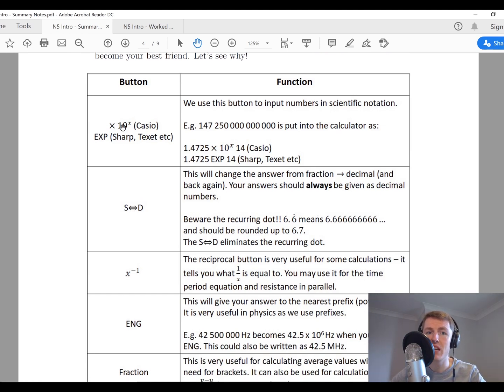The first one would be the times 10 to the x button if you're using a Casio, or the EXP button if you're using a Sharp or a Texas Instruments. This is basically the scientific notation button. It will help you input numbers into scientific notation. So let's say you had this huge number here and you wanted this in scientific notation, then this would be in the calculator as 1.4725 times 10 to the power of x times 14.